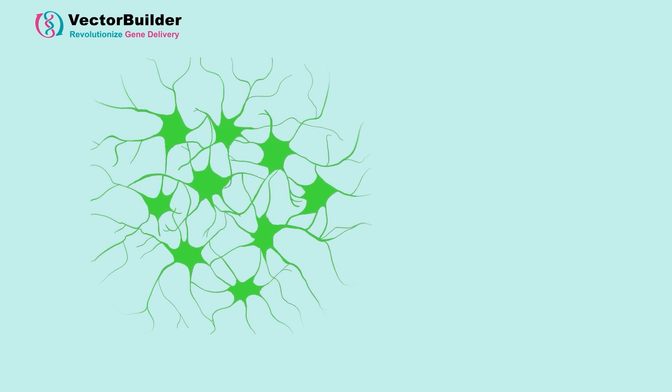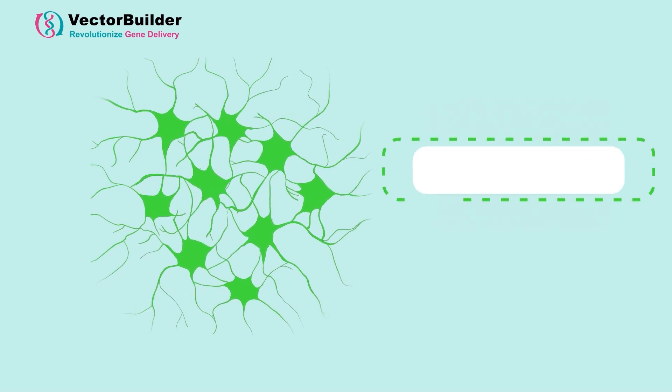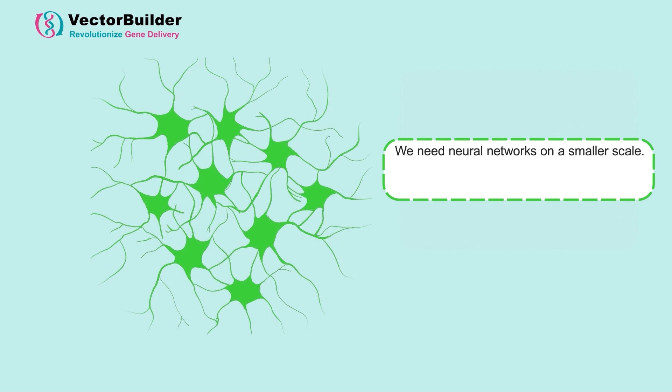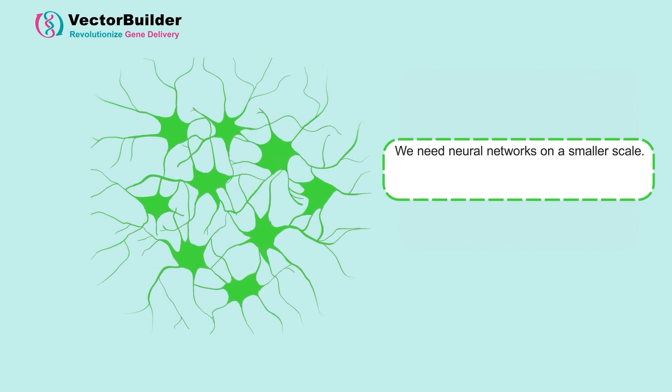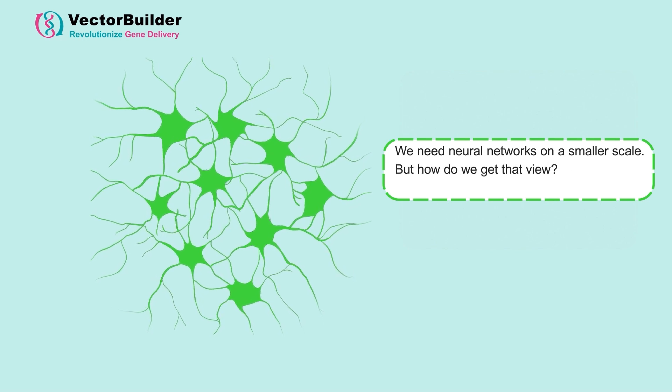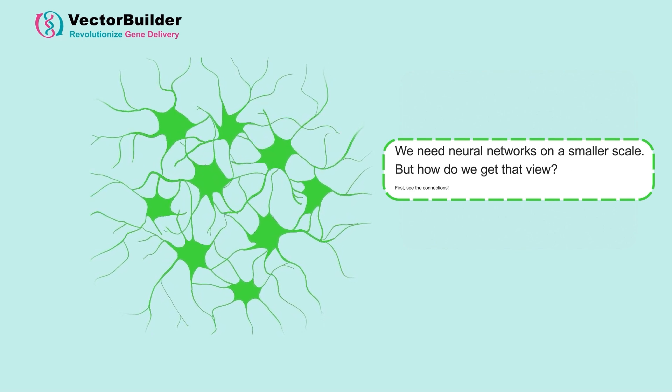So what we have to do is strip this down and look at the neural networks on smaller scales. Then we can put these pieces together to gain a broader understanding. So how do we get that small-scale view of the network?